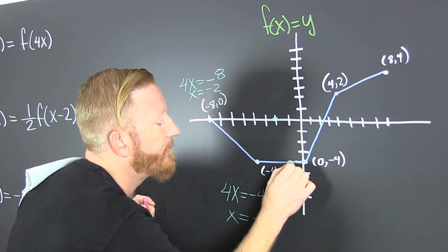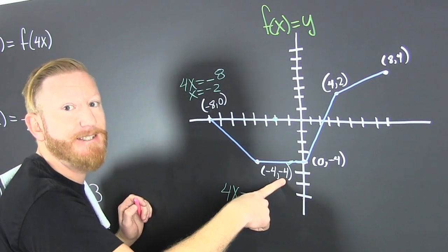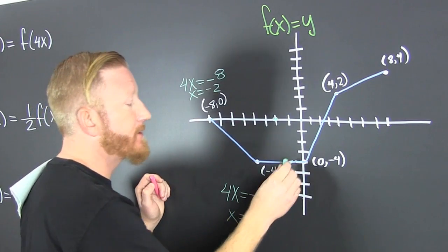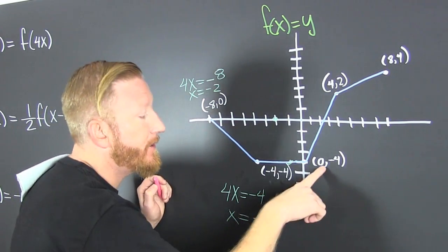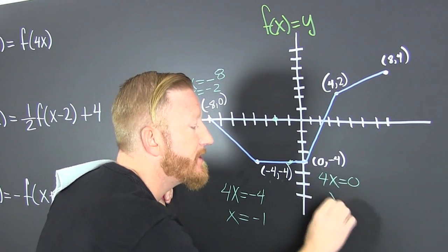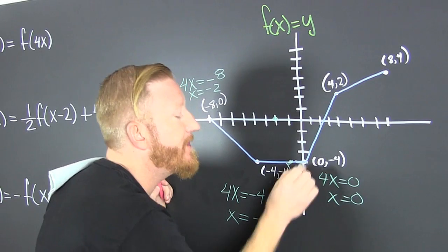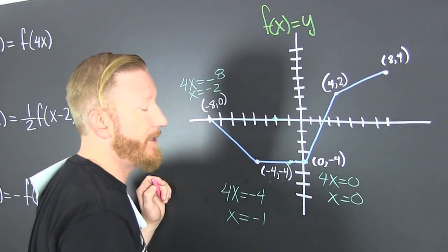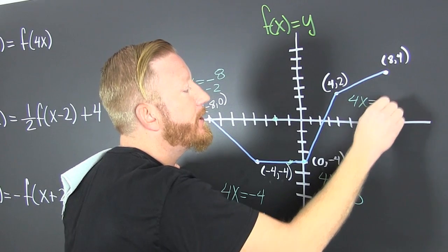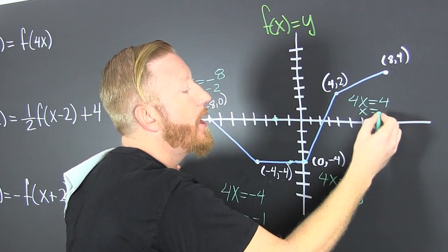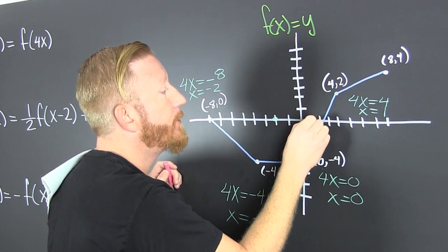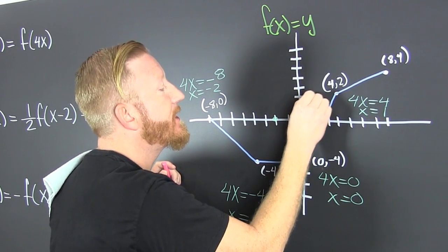So minus 1, 4. Did I change the y? I didn't. That says nothing about y. We're talking about x. So here, 0. 4x is equal to 0. So x turns out to be 0. That point remains on there. This one, 4x is equal to 4. So then x is equal to 1. Didn't change the y. Still a deuce.